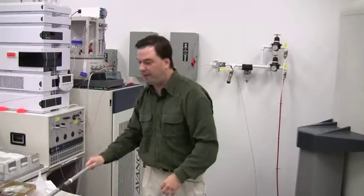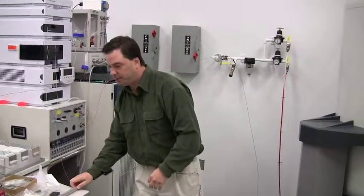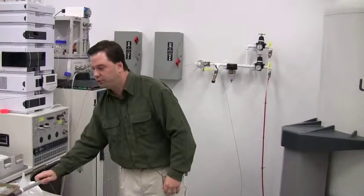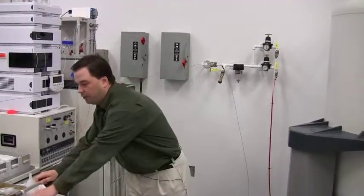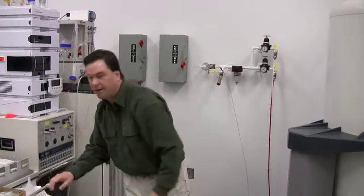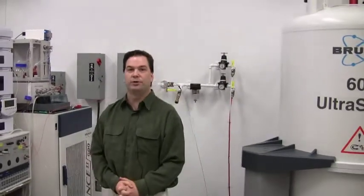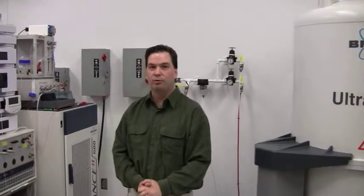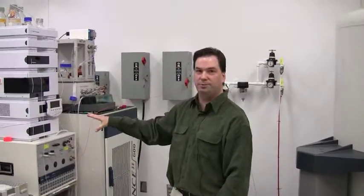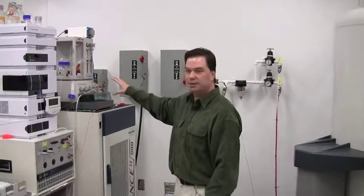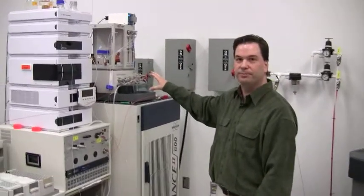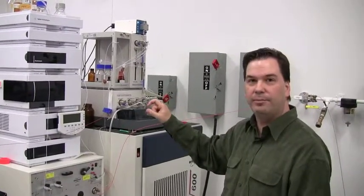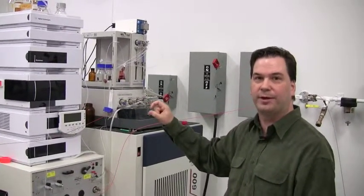The main drawback with this type of technology is that to do the direct flow requires using deuterated solvents, and as we know that deuterated solvents can be expensive. The alternative is if your material is not going to decompose and if it's relatively stable, we could actually send it from the HPLC and trap it onto a solid phase extraction station. This solid phase extraction station works like a mini column. It actually traps the material on the column.